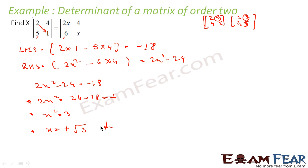In the examination, make sure you can distinguish between a matrix and a determinant. The symbols are different: a matrix uses square brackets while a determinant uses straight vertical lines. Don't get confused between the two.